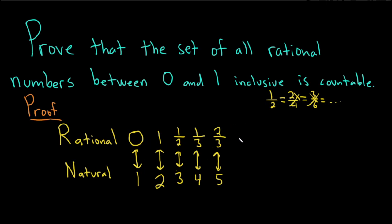Let's do 4. So 1 over 4 is okay. So 1 over 4, that corresponds to 6. And 2 over 4 is not okay, because 2 over 4 is one-half. We've used that. And then we have 3 over 4, and that will go to 7.